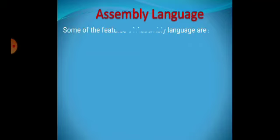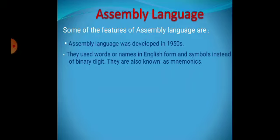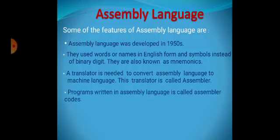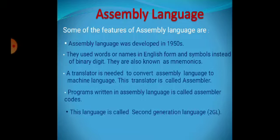Next comes assembly language, which is also a low level language. This language was developed in the 1950s. It uses words or names in English form and symbols instead of binary digits; these are also known as mnemonics. A translator is needed to convert assembly language to machine language — this translator is called an assembler. A program written in assembly language is called assembler code. This language is called a second generation language.